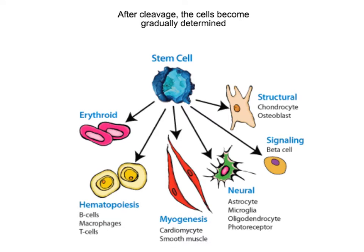So we go from a cell that can be any part of the embryo to a cell that, as we go through development, its path becomes more and more limited. So if it is going to be a cell in the mesoderm, that cell will only give rise to tissues that derive from the mesoderm. For example, the mesoderm gives rise to muscles, so that cell could become a muscle cell, but it will not become a nerve cell, because those cells develop from the ectoderm. So that cell is already committed to being a specific type of cell.